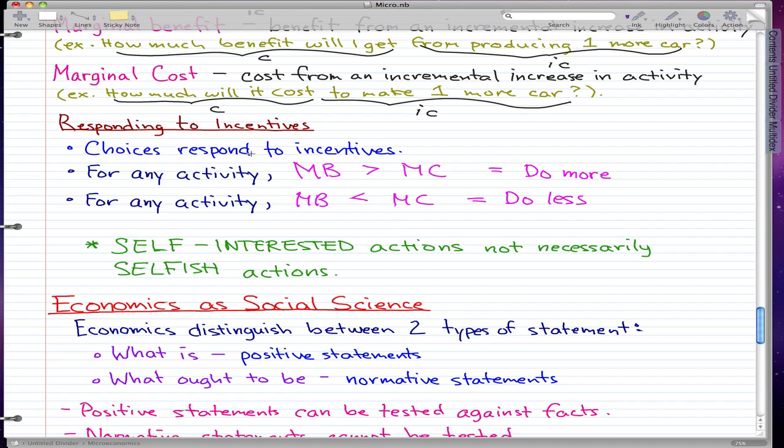In this video we're going to focus on responding to incentives. We all know that choices respond to incentives. For any activity, when marginal benefit is greater than marginal cost, we do more of that activity. And for any activity, when marginal benefit is less than marginal cost, we do less of that activity.